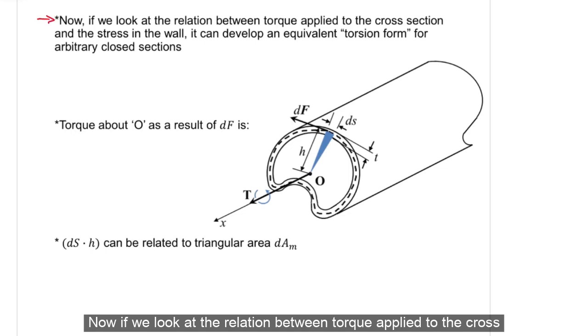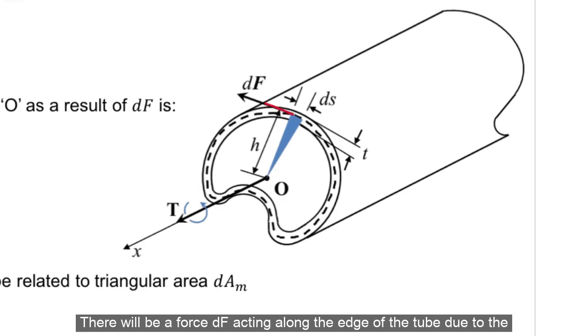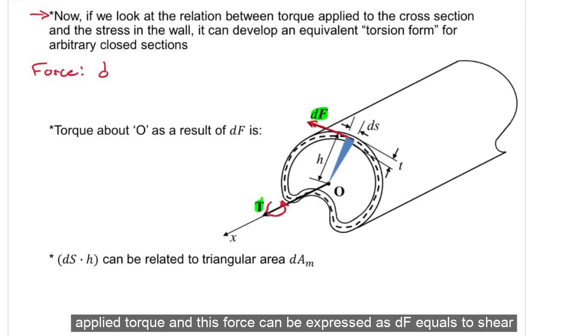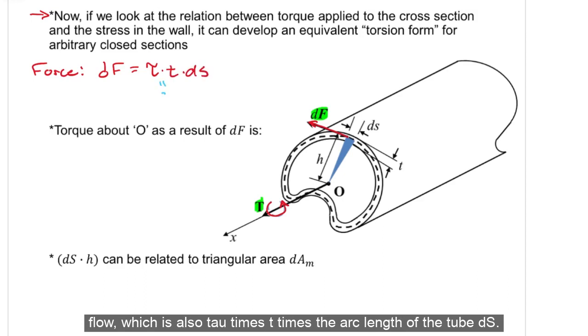Now, if we look at the relation between torque applied to the cross section and the stress in the wall, it can develop an equivalent torsion form for arbitrary closed sections. There will be a force, dF, acting along the edge of the tube due to the applied torque, and this force can be expressed as dF equals to shear flow, which is also tau times T times the arc length of the tube, dS.